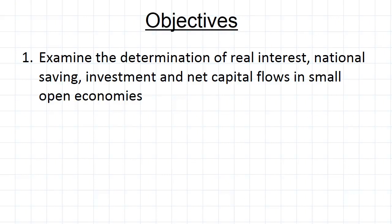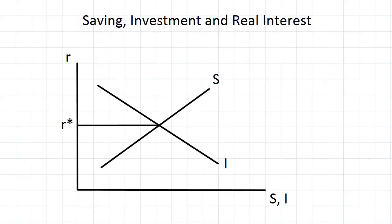One more thing worth looking at is what happens in small open economies. We're going to look at how the real interest rate is determined, and how national savings, investment, and net capital flows are determined. To recap, in a closed economy savings and investment are determined like this: savings is an increasing function of the real interest rate, investment is a decreasing function, and where they reach equilibrium is where we get the real interest rate. This is a refresher, and we'll see how this differs in small open economies.